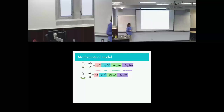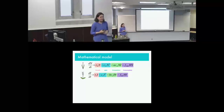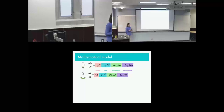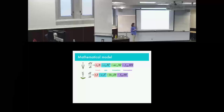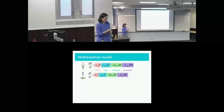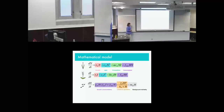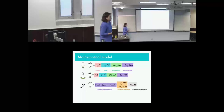Plant population growth followed logistic growth with negative density dependence. The two plant species competed using Lotka-Volterra style competition dynamics and were consumed by an herbivore with a linear functional response. The herbivore grew according to how much plant it consumed and experienced losses due to predation by spiders as well as background mortality from extrinsic factors. All of this is really nothing new, but I added a twist to the predator equation.